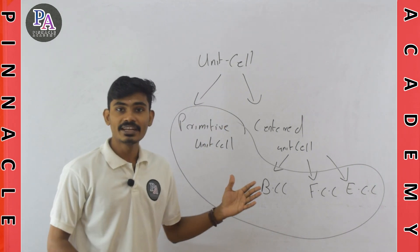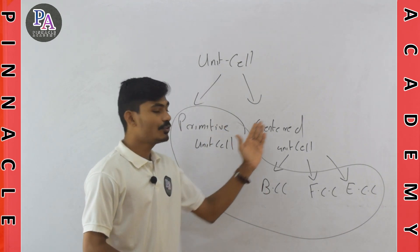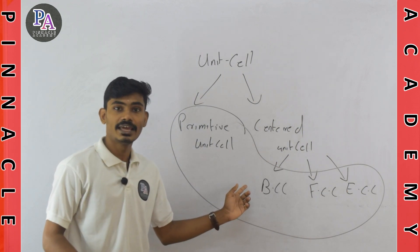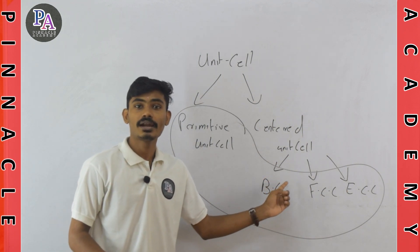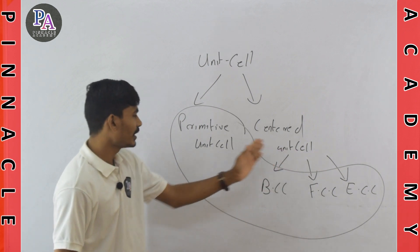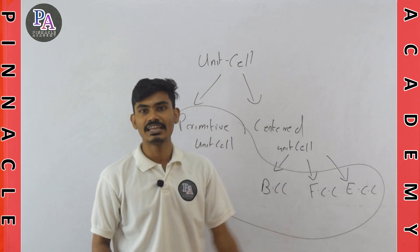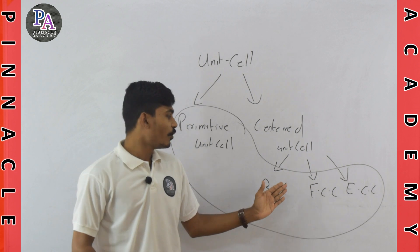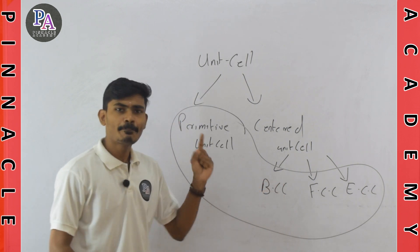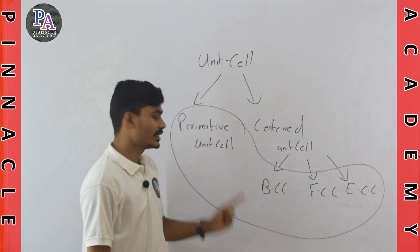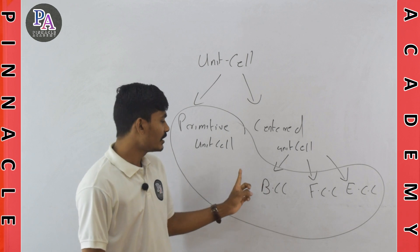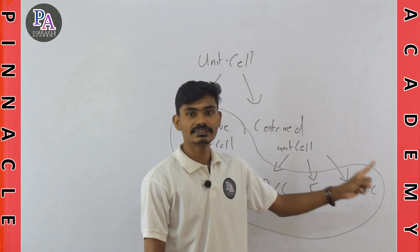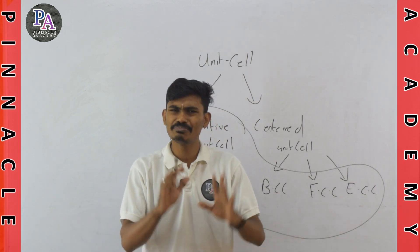In our next section, we have to calculate the number of constituent particles under one unit cell. We can generalize the constituent particle as an atom. We are going to find the number of atoms in a primitive unit cell, body-centered cubic, face-centered cubic, and end-centered cubic. It is a simple calculation.